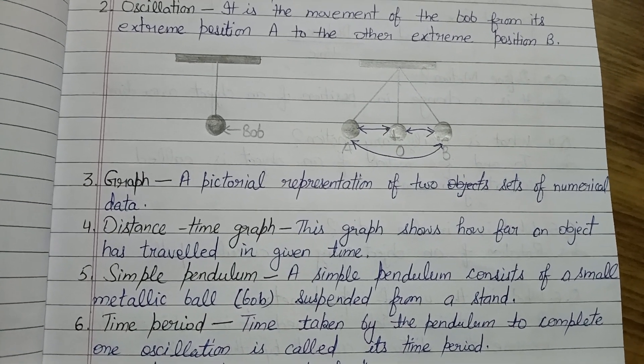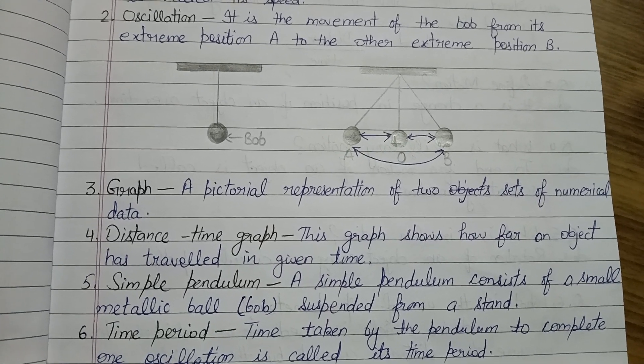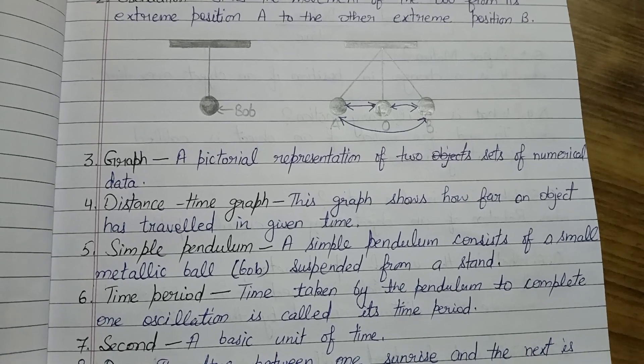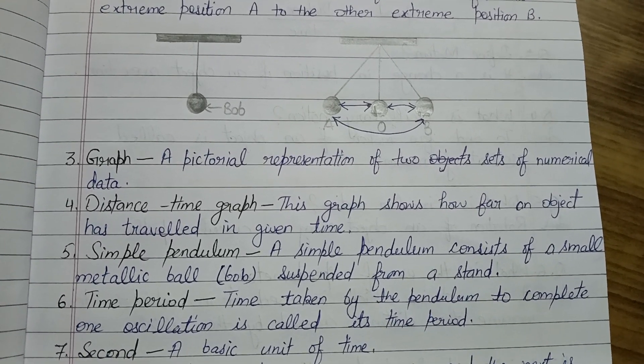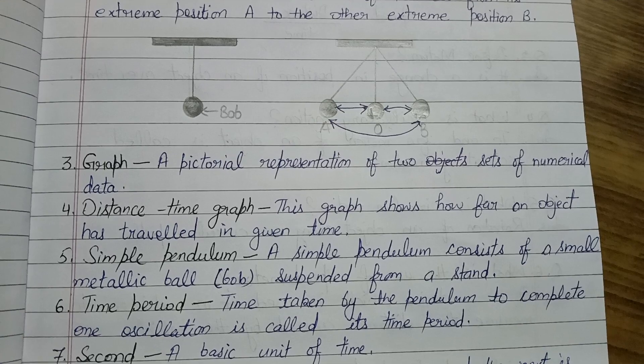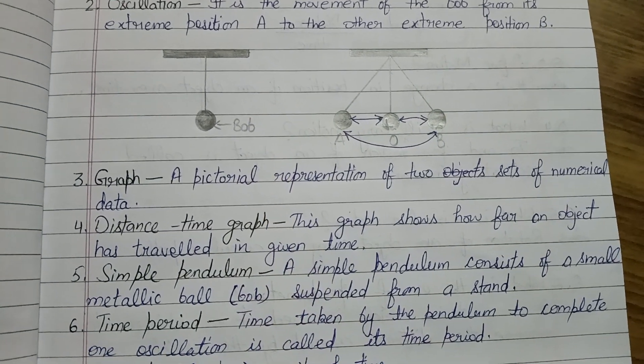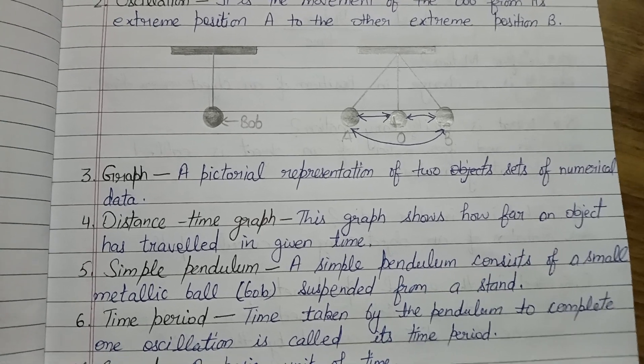Yeh graph humein kya batata hai ki koi bhi object ne kitna distance travel kiya hai in the given time. Next is simple pendulum - a pendulum consists of a small metallic ball. Wo pendulum jis mein ek small metallic ball hoti hai, ek pendulum hai jise hum bob bolte hai, aur ek stand ke saath usko humne suspend kiya hota hai.